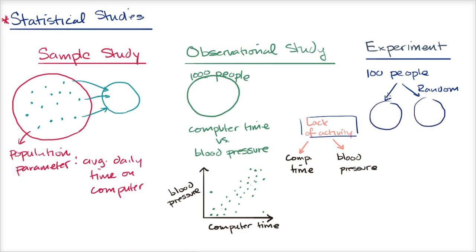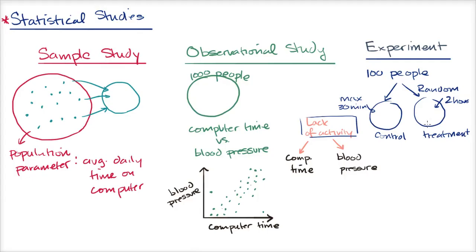You have a control group and a treatment group, both randomly assigned. The control group might be required to spend a maximum of 30 minutes in front of a computer, while the treatment group must spend exactly two hours in front of a computer. You measure everyone's blood pressure before the experiment to confirm averages are similar going in. Then after some amount of time, you measure blood pressure again. If this group — the treatment group — has a noticeably higher blood pressure, that is meaningful evidence.